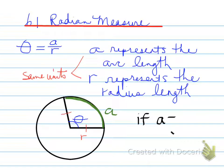Keep in mind that theta is measured in radian measure. Now, if, for example, the arc length was equal to the radius length, it would mean that theta would equal 1. What that implies is that we would have one radian measure would exist if the arc length and the radius length were the same.